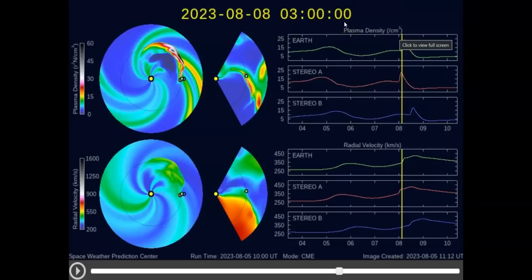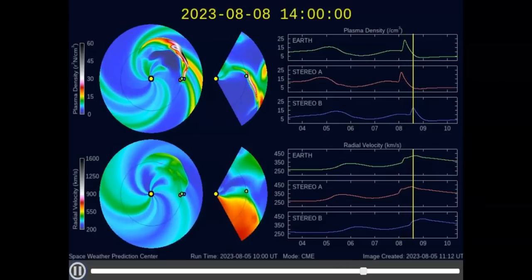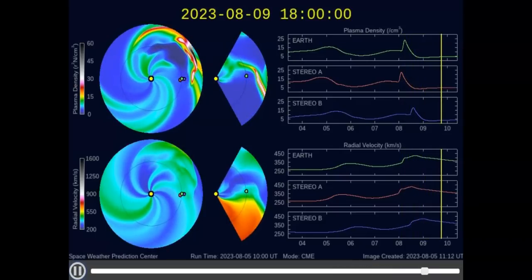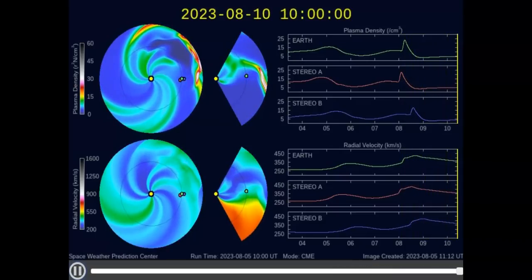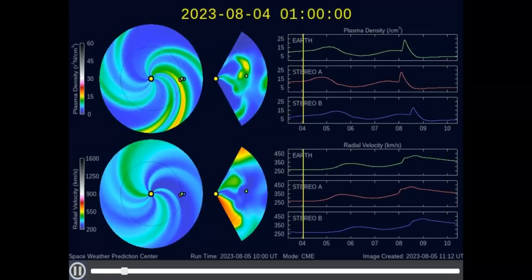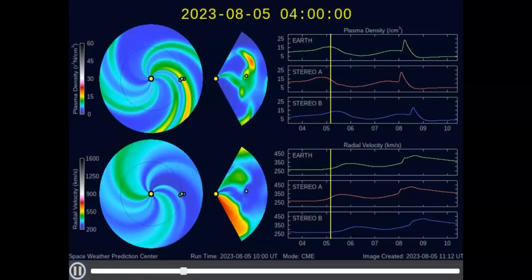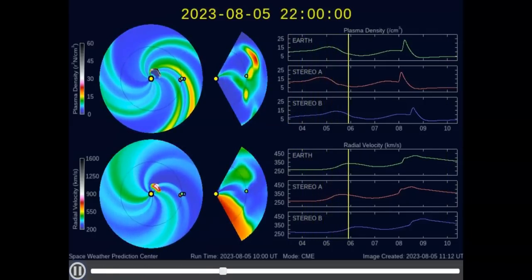I've got it paused here. This would be on the 8th at 0300 hours universal time, which is about 10 p.m. on the 7th on the East Coast. About five hours of difference. So about 10 p.m. on the 7th, we're looking at the arrival time. We'll play it through. It's going to leave from the sun in the center.